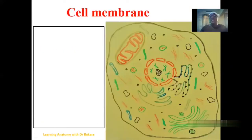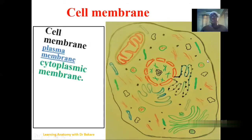Let's look at the cell membrane. We say that the cell membrane forms the boundary of the cell — it forms a limit of the entire cellular configuration. It is also referred to as the plasma membrane or the cytoplasmic membrane.